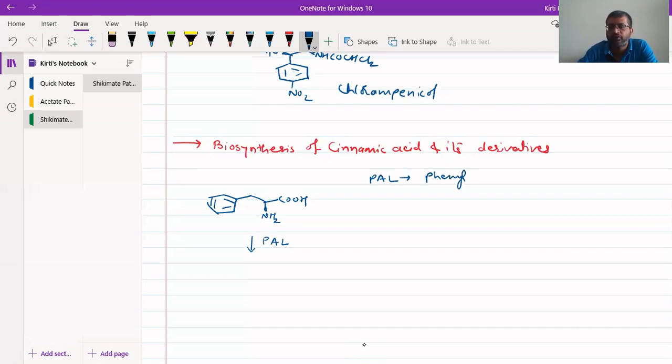Phenylalanine ammonia lyase, L-Y-A-S-E, lyase enzyme. This can be asked for one more question. This enzyme will be removing this amine and hydrogen from here so that we will get cinnamic acid from this phenylalanine.